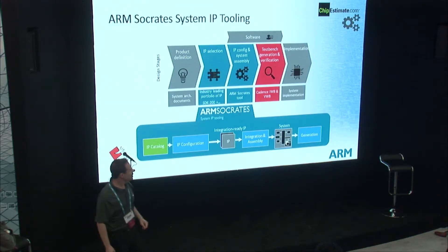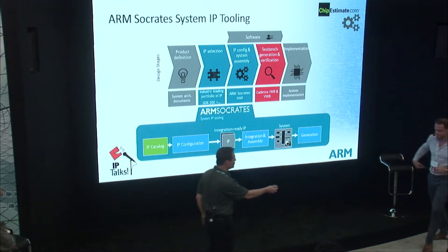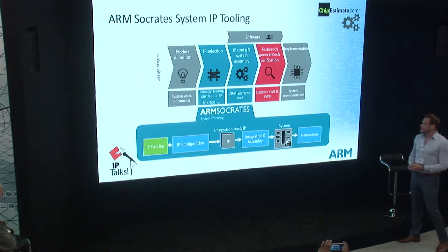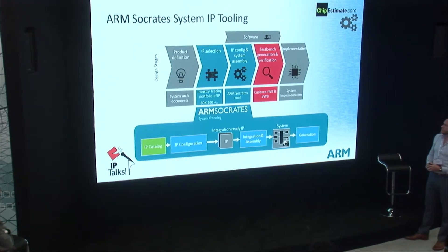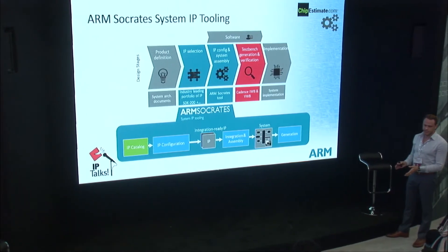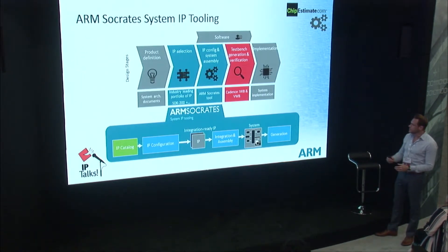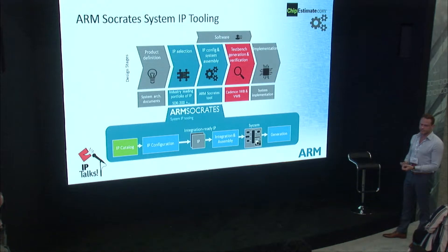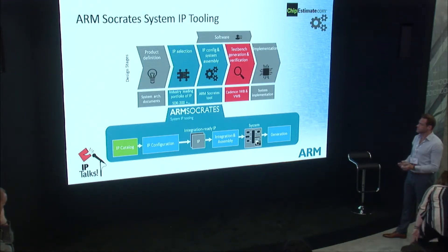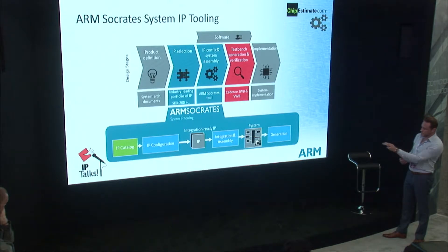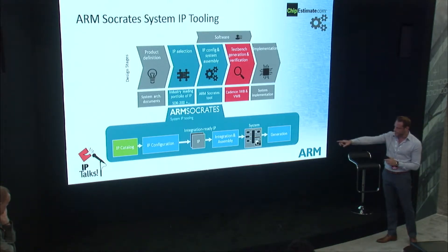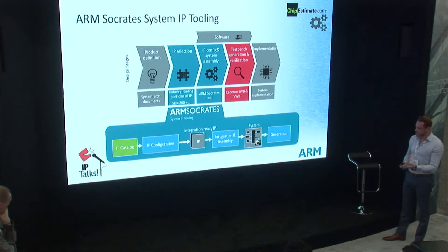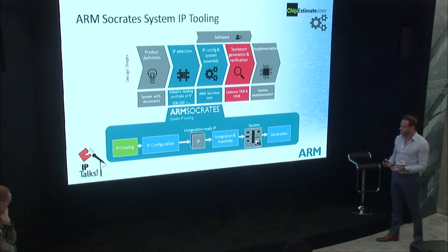Now let Simon continue on the tooling side. At ARM, we have what we call our Socrates product line of IP tooling that works very well with ARM IP and our subsystems. Socrates helps guide the selection of IP. Specifically for ARM IP, the tool features an IP catalog — as you can see in the diagram here — which presents you with a list of all ARM IP, categorized from CPUs to multimedia to system IP and interconnects.